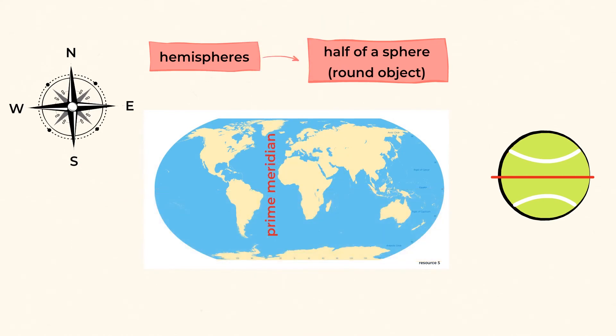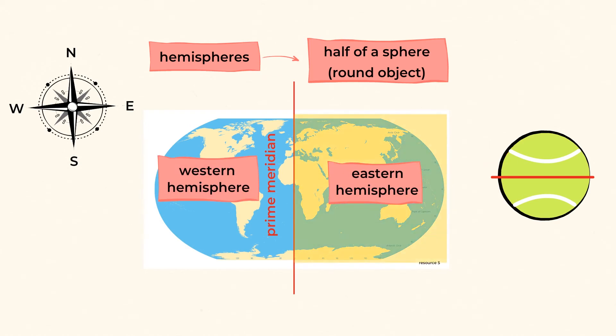And there's also the Prime Meridian. The Prime Meridian is an imaginary line that splits the Earth into East and West hemispheres. Places located to the East of the Prime Meridian are in the Eastern hemisphere, and places located west of the Prime Meridian are in the Western hemisphere.